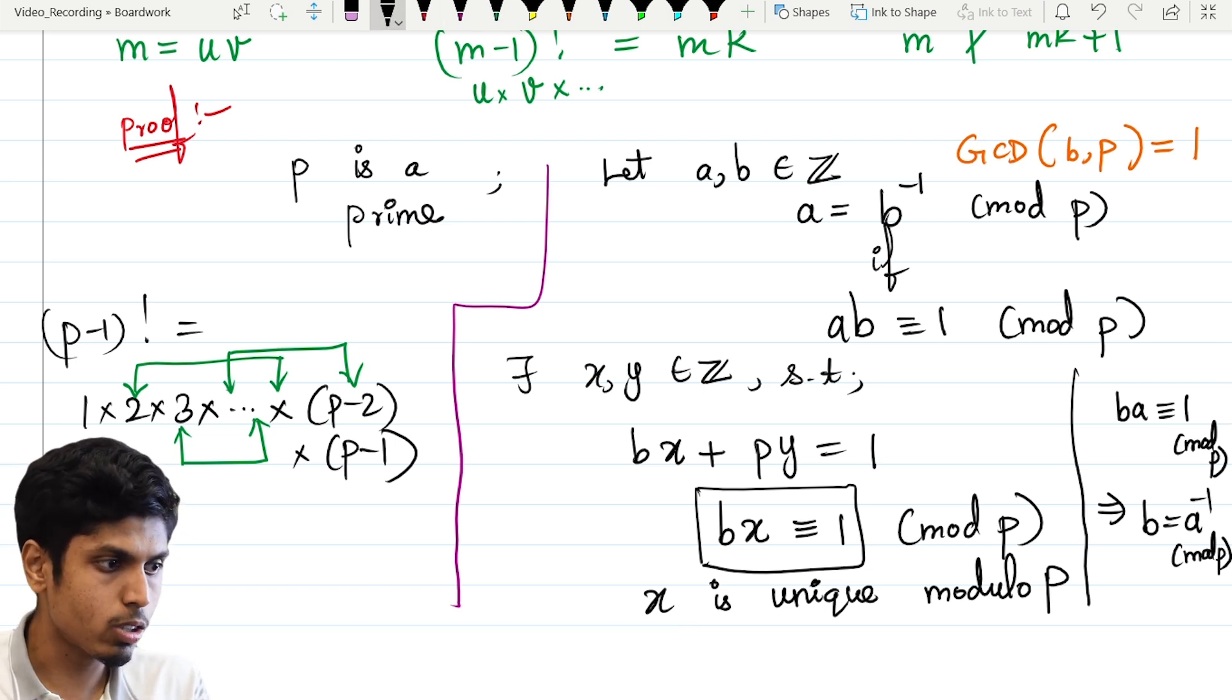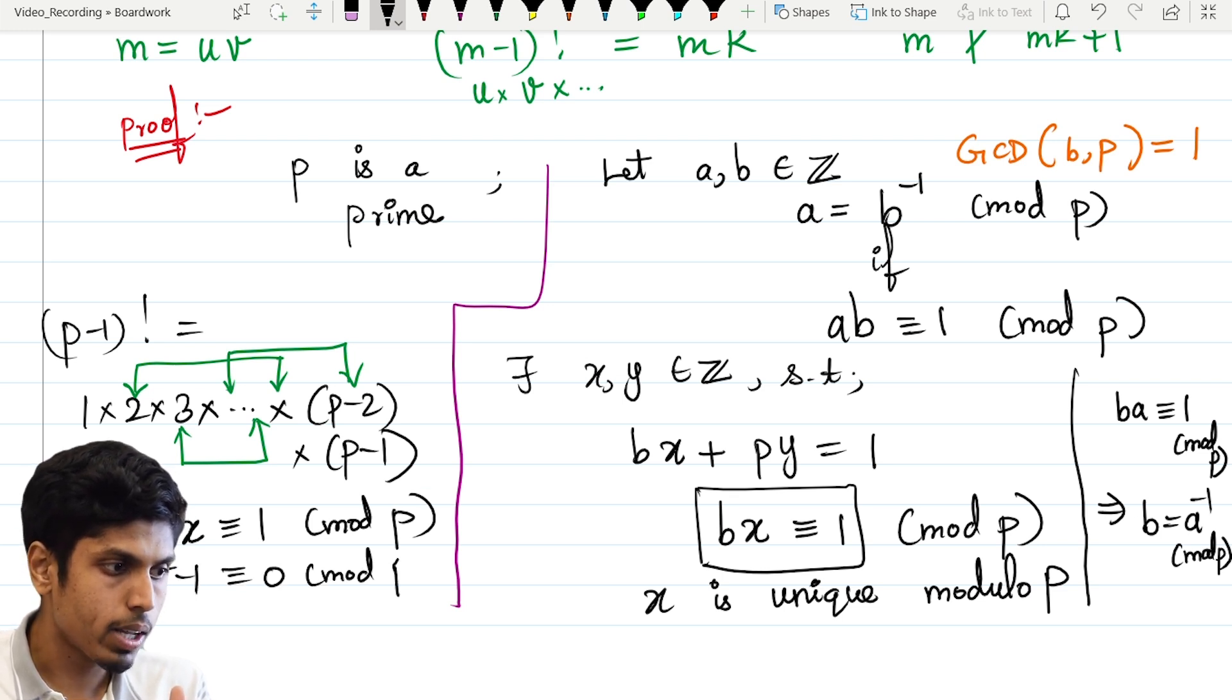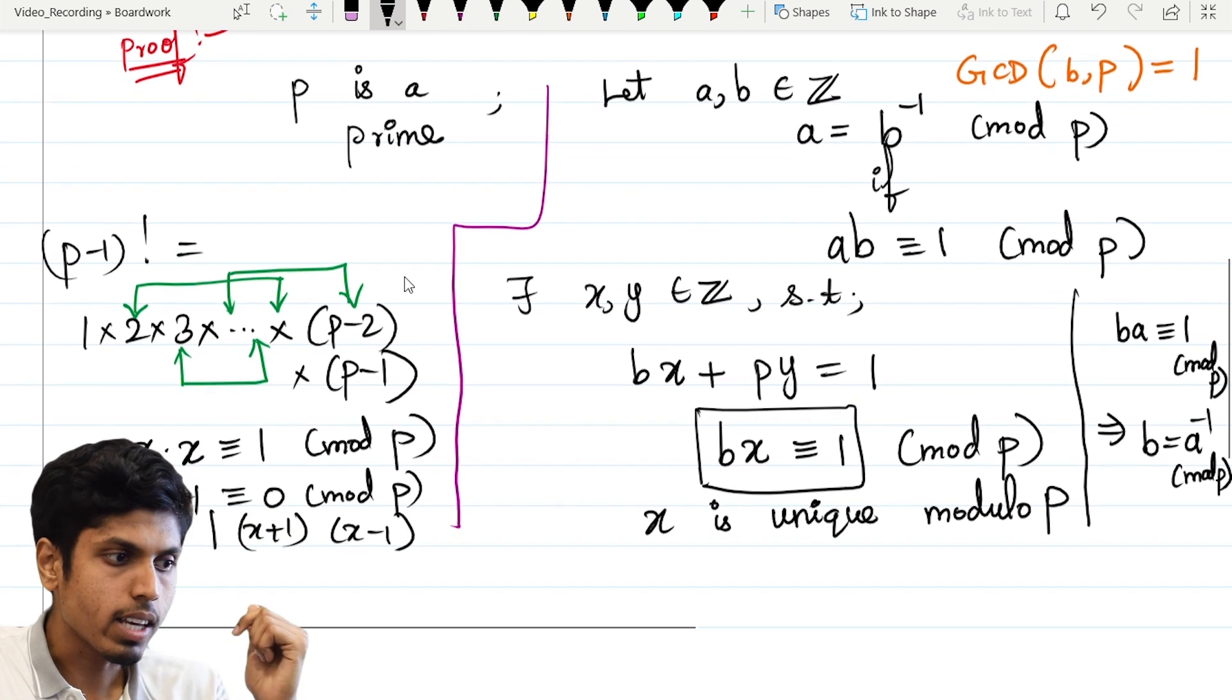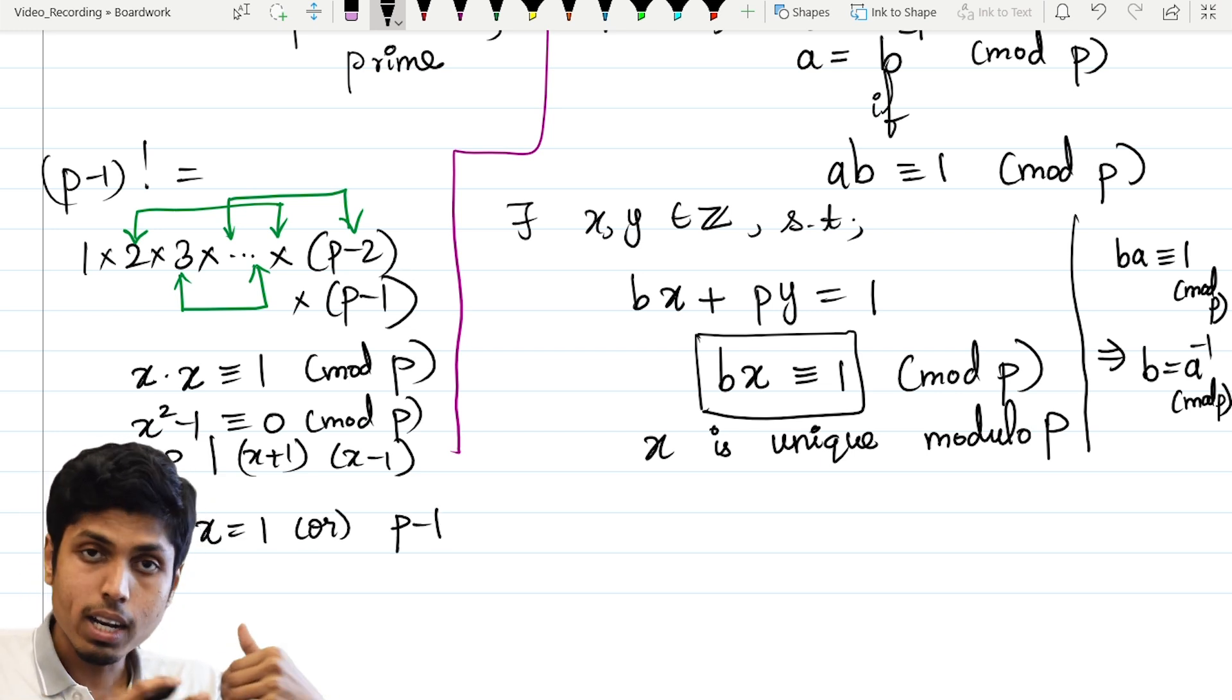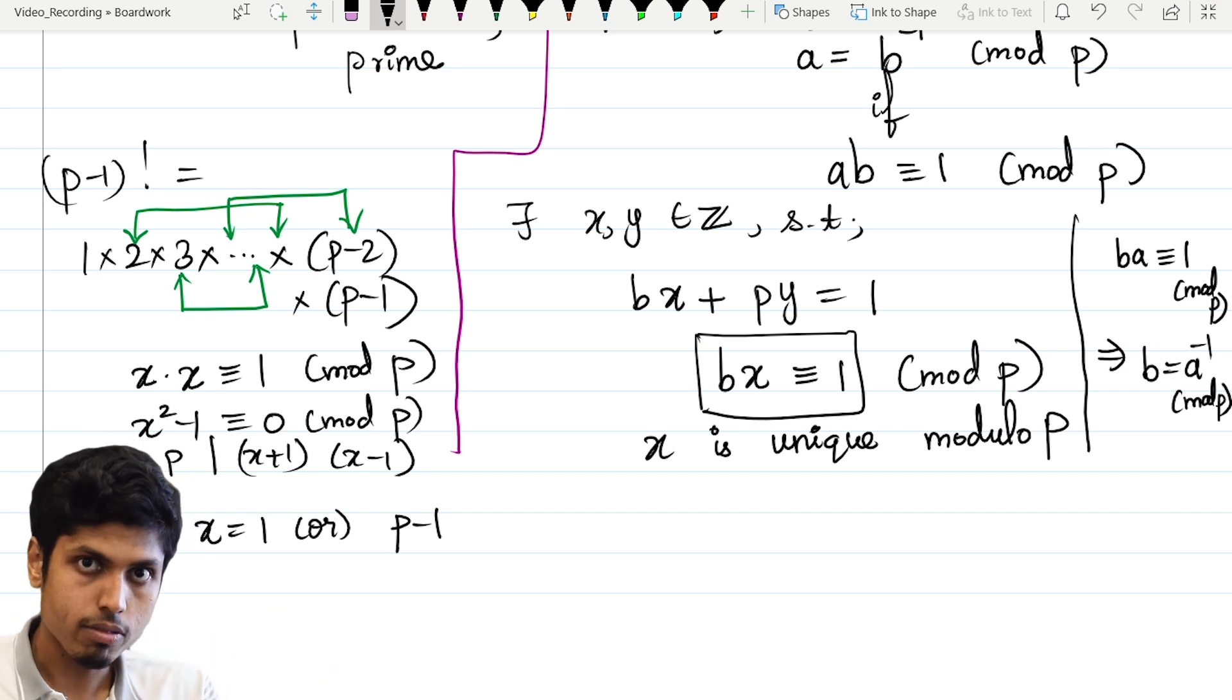So let's find for which number the inverse is itself. Let's consider those numbers such that x into x is congruent to 1 mod p. And clearly, x square minus 1 is congruent to 0 mod p. And that implies p divides x plus 1 into x minus 1. And that would happen when x is either 1 or p minus 1. So only for the numbers 1 and p minus 1, the inverse is itself. And that's when I can't pair up.